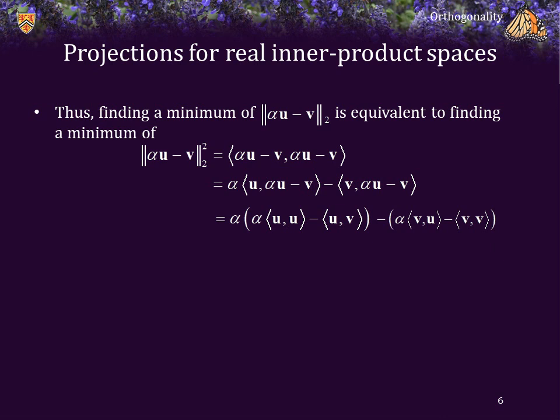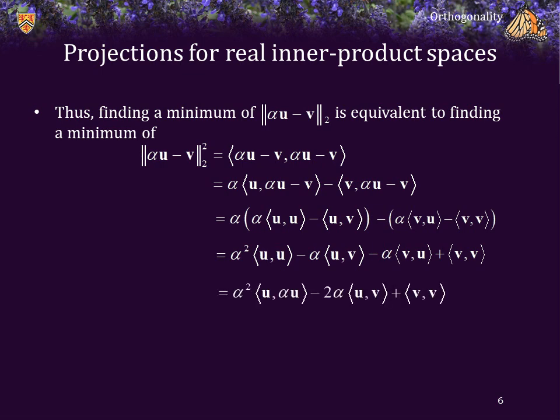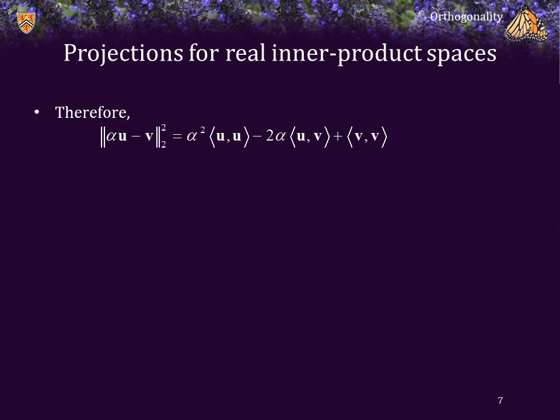Expanding fully, the first term is α² ⟨u, u⟩ − α⟨u, v⟩. The second term is −α⟨v, u⟩ + ⟨v, v⟩. For real inner product spaces the inner product is symmetric: ⟨u, v⟩ = ⟨v, u⟩, so we can simplify. The 2-norm squared equals α²⟨u, u⟩ − 2α⟨u, v⟩ + ⟨v, v⟩.